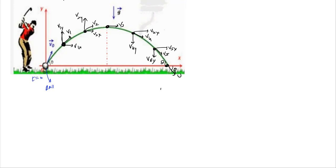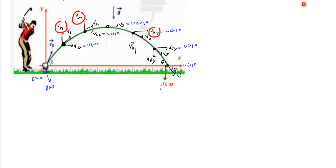The horizontal component of velocity is u cosθ and remains constant. Which component of velocity is changing? The vertical component. As the golf ball ascends, the vertical component keeps on decreasing. At the highest point it becomes zero. The maximum vertical velocity is at the point of projection, equal to u sinθ.